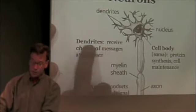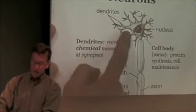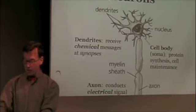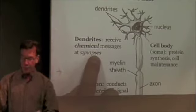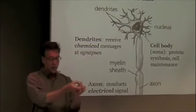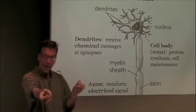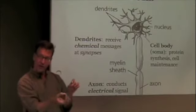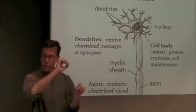The dendrites, you should know, are actually the site of receipt for the chemical messages that are traveling across the synapse. So basically, when a neuron's electrical message reaches the end, which will be the axon, there's going to be a translation of that electrical message into the chemical release of that neurotransmitter.